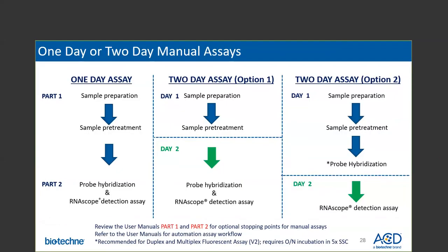The RNAscope assay can be run in a single day or split into two days. If performing the assay over two days, one option is to complete sample preparation and pre-treatment on day one, then start with the probe hybridization step on day two. Alternatively, you may finish the probe hybridization step on day one — including the two-hour probe incubation and subsequent wash buffer washing, leaving slides in 5x SSC solution overnight — and perform the amplification and detection steps on day two. The second option is preferable, particularly when running the duplex or multiplex assay as the additional amplification steps can lengthen the procedure.